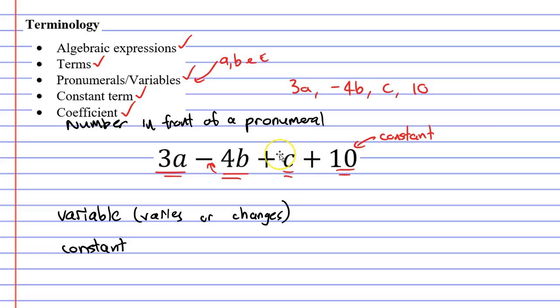And c doesn't actually have a coefficient. Well, that's what we think when we first look at it. But actually it does. It has a coefficient of 1. Whenever there's no number, it actually means 1c. So why do you think that we don't put the number 1 in front of a pronumeral? Well, there's actually a very good reason for that.